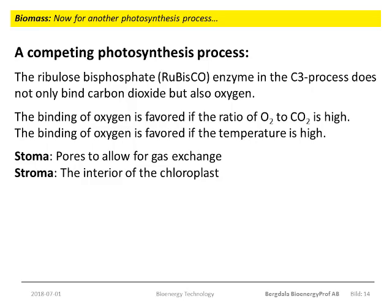These pores are called stomata — one stoma, several stomata — and can be opened to allow for gas exchange, or closed, for example to minimize the losses of water from the plant. Do not mistake the pores, stoma, for the chloroplast interior liquid, stroma. In hot and dry conditions, the plant will benefit from closing the stomata to save water, and then oxygen will enrich in the stroma. That will favor the counterproductive binding of oxygen to the RUBISCO. So the efficiency of the C3 cycle, or the Calvin cycle, drops significantly with high temperature and dry climate when the plants need to economize with water.